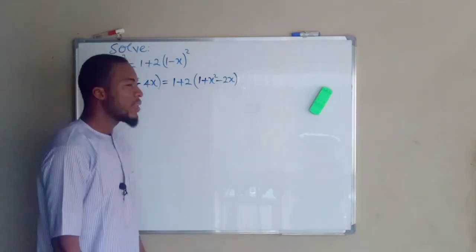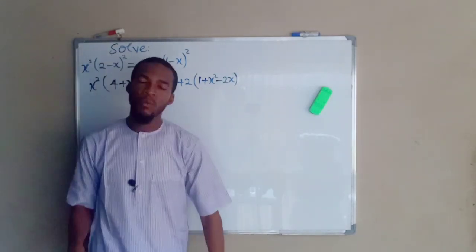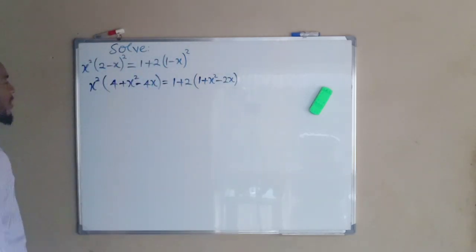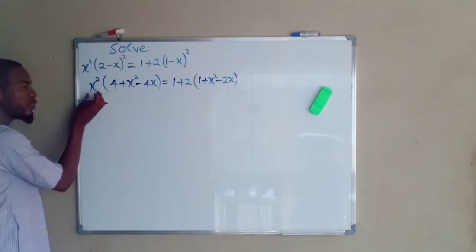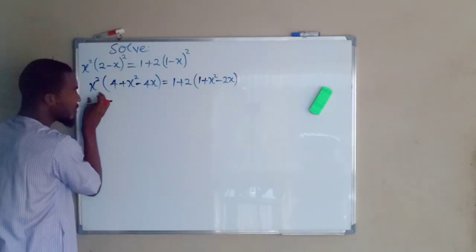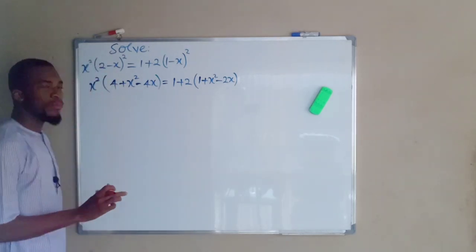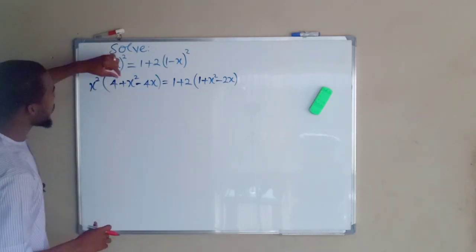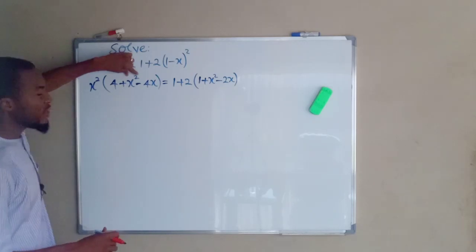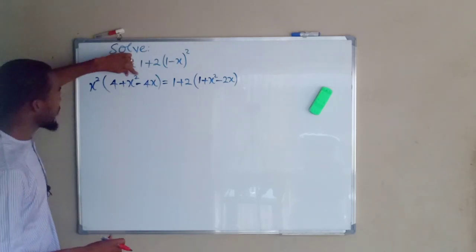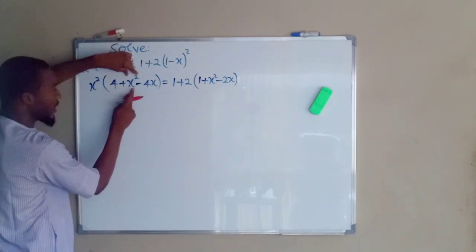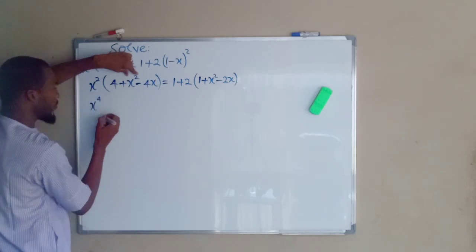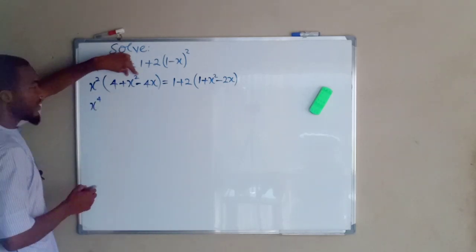We are done with the first step. Next we are going to open these brackets, distributing from left to right again. We are going to distribute x squared throughout the terms in the bracket, starting with this x squared which has the highest degree. x squared times x squared gives us x to the power of 4, by the laws of indices.